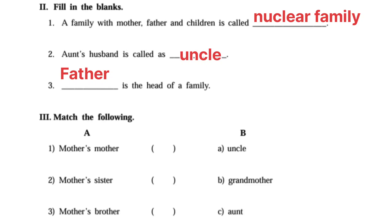Fill in the blanks. First one: A family with mother, father and children is called nuclear family. Second one: Aunt's husband is called as uncle. Third one: Dash is the head of a family — Father.